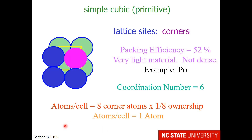The number of atoms in this unit cell is 1. There are 8 corner atoms, each one eighth inside the volume of that unit cell, for a total of 1 atom.